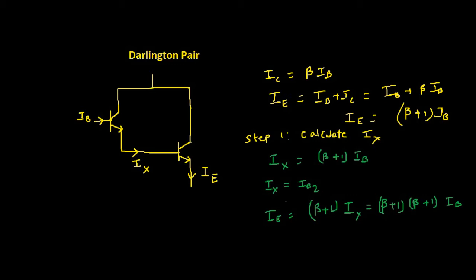on simplifying this equation, we get the final value of IE, that is emitter current of second BJT. This will be equal to beta plus 1 whole square times IB.